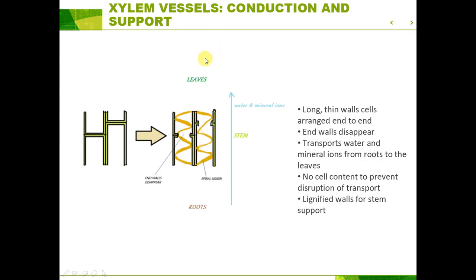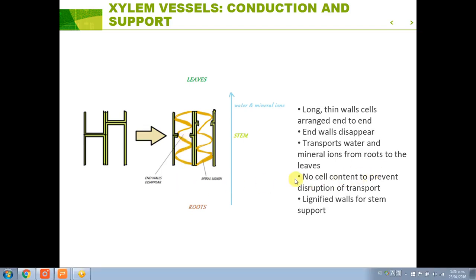Next up is the xylem vessels. Xylem vessels are pretty interesting in the fact that originally they are these long thin walls of cells lined end to end. What happens is that the ends of these cell walls disappear over time, ending up producing a hollow structure or vessel. While doing so, all the cell contents within the cell get removed. The purpose of xylem vessels is to transport water and mineral ions from the roots all the way up to the leaves, so it makes sense that they don't have any cell contents, as that would prevent the flow of water upwards.